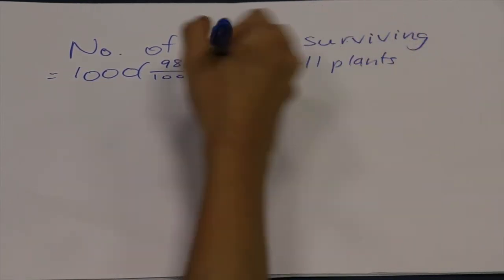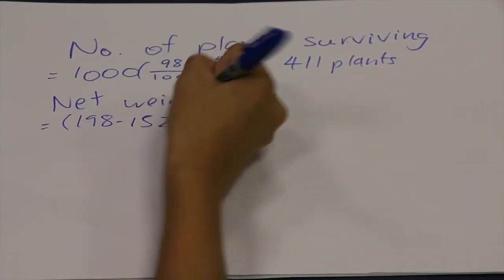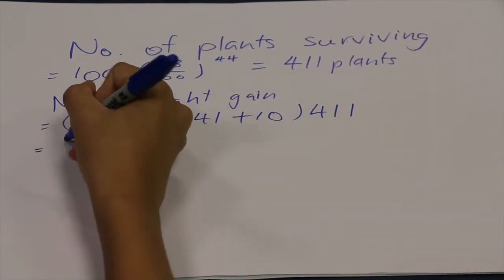The total net weight gain equals 198 minus 152.141 plus 10 times 411, which gives 22958.049 grams.